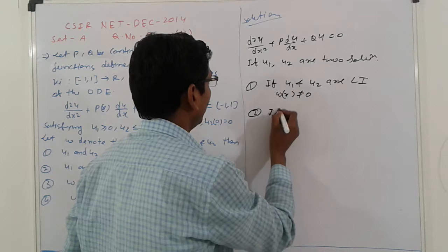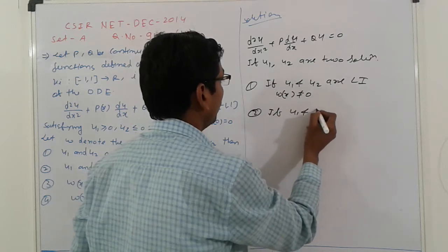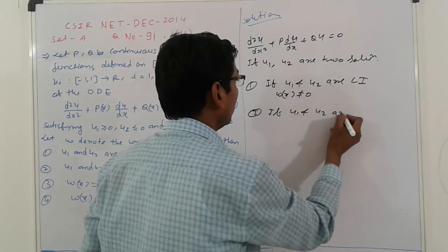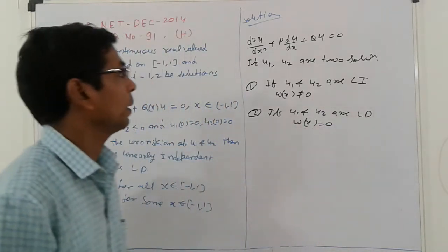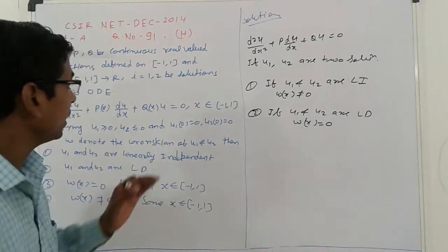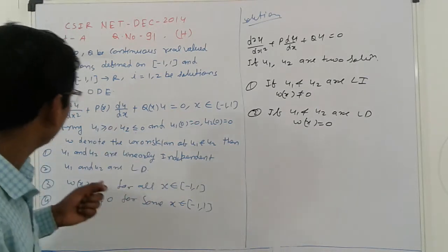Second, if U1 and U2 are linearly dependent, then Raskian is equal to 0. Here first, next friends, the conditions.